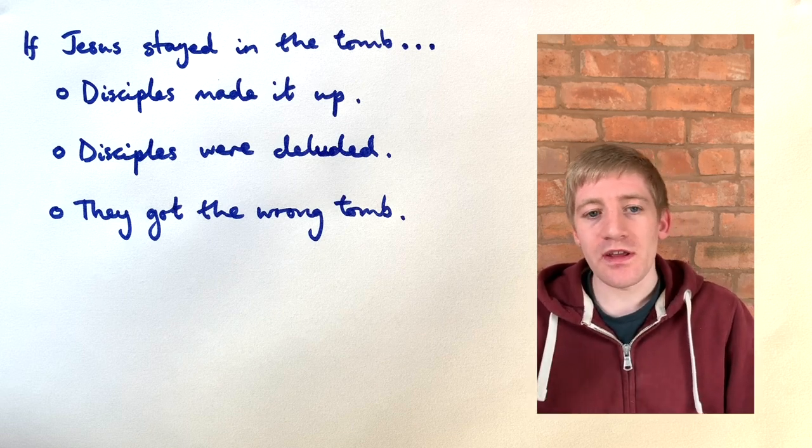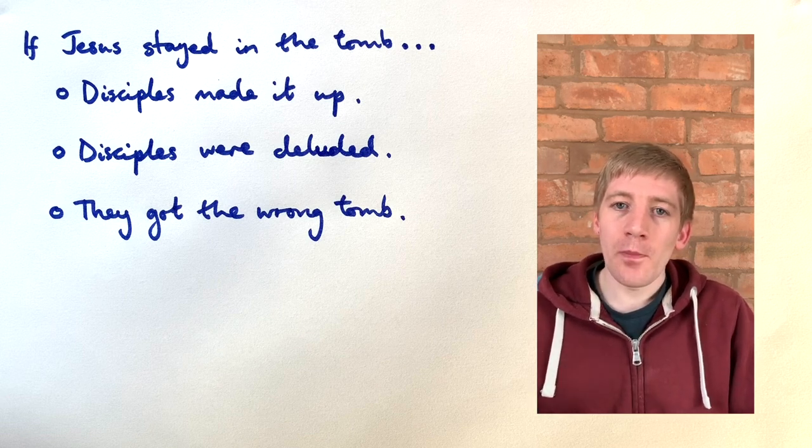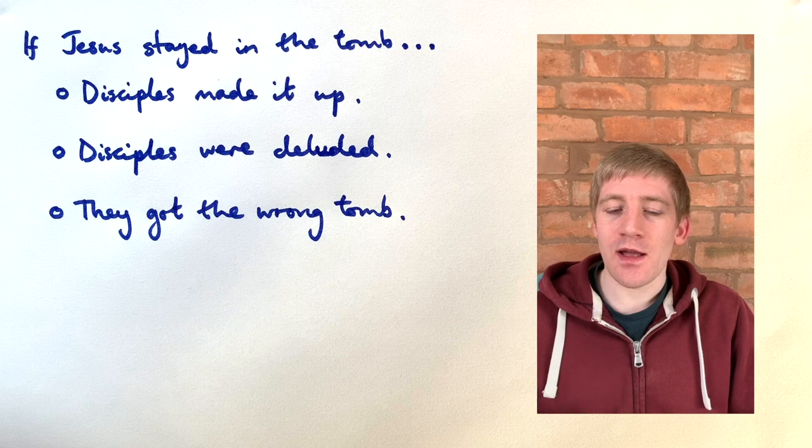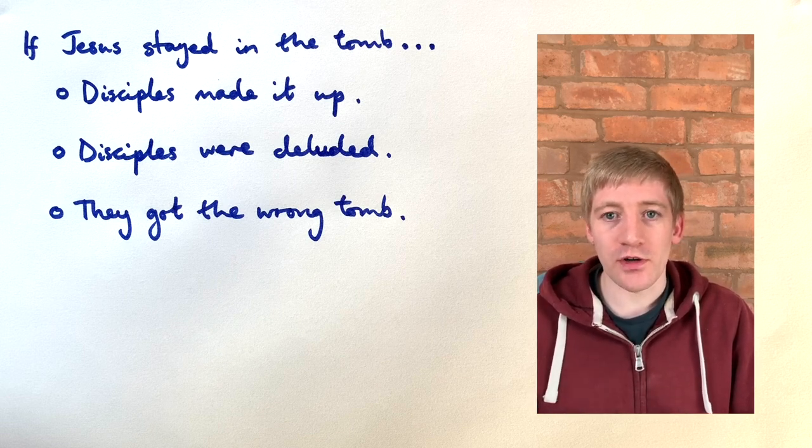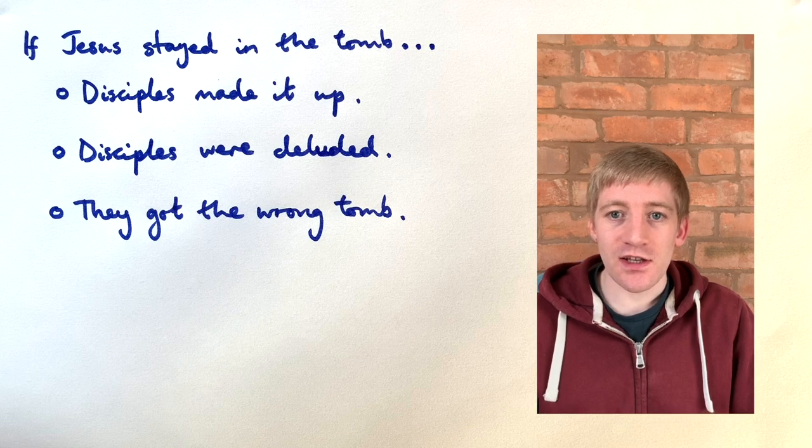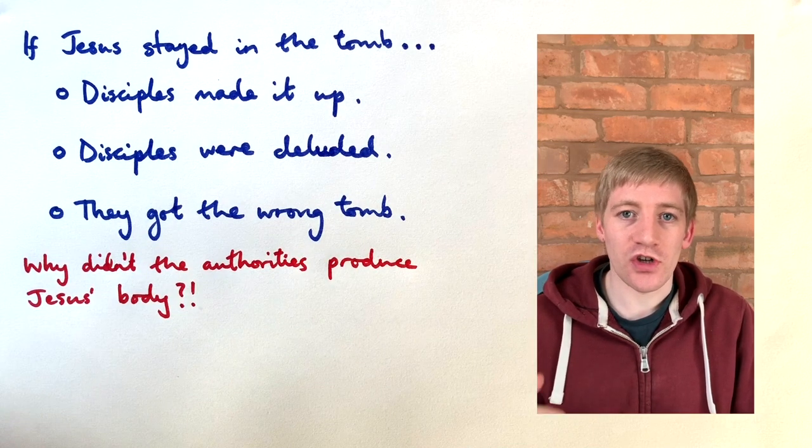These three theories are probably the easiest to argue against because nobody has ever been able to explain why the authorities who didn't want the disciples to go around preaching the resurrection didn't just get Jesus' body out of the tomb and present it to show that he was actually dead.